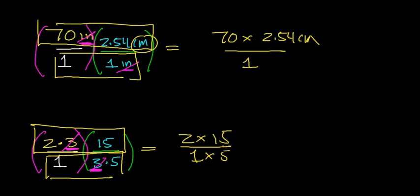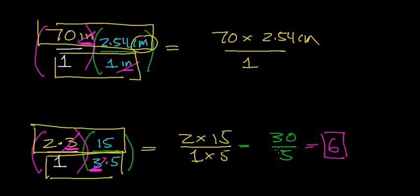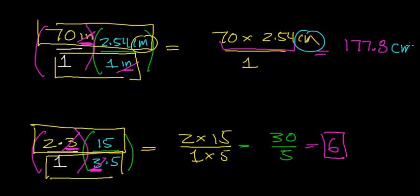We can further simplify: 2 times 15 equals 30, divided by 1 times 5 equals 5, and 30 divided by 5 equals 6. In the same way, 70 times 2.54 works out to 177.8. We include the units of measurement — centimeters — and that gives us our final answer of 177.8 centimeters.